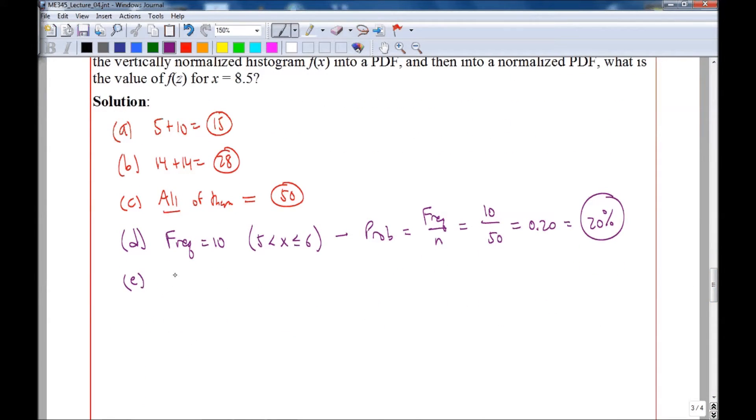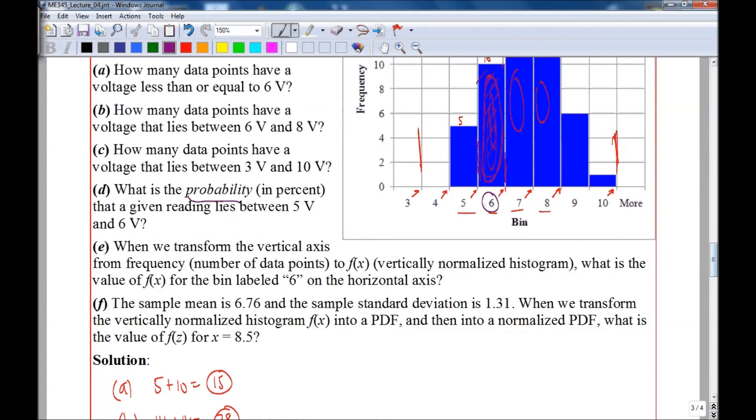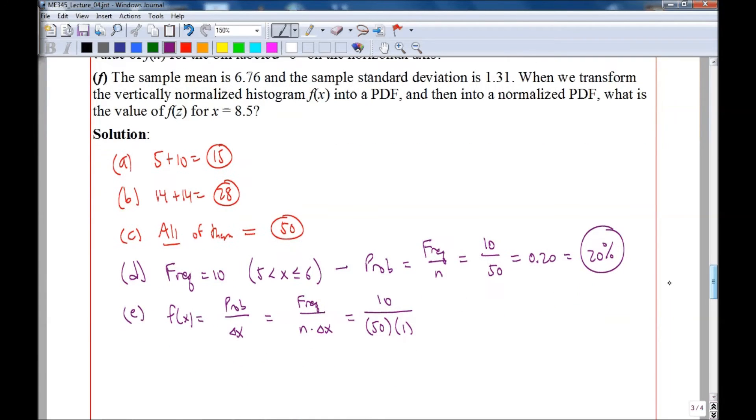And therefore we would write f(x) equals the probability divided by delta x, and the probability is the frequency divided by n. The frequency is the number of data points in that bin between five and six—that's 10. n is 50, and the bin width delta x is 1, which we can see from the plot. The difference between five and six or six and seven, the width of these bins is one. Therefore delta x is one and we get 0.20 as our f(x).